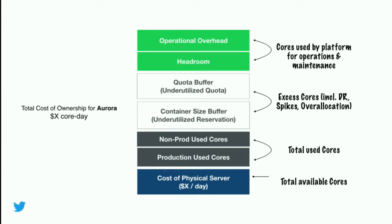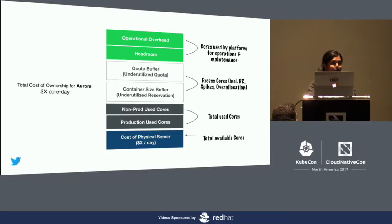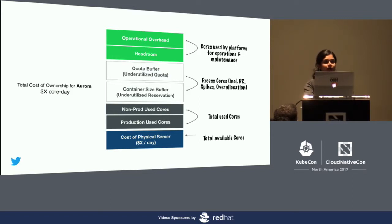Finally, the unit price also accounts for cores used by the compute team themselves for testing, operation, and maintenance. We treat this as a general tax that is equally distributed across the pricing of all the chargeback cores. We wanted to ensure that we keep the cost true to the model and not some artificial charge to ensure resource utilization.